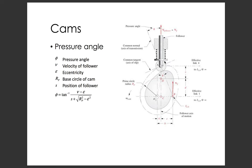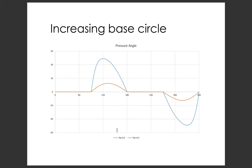When I plot the pressure angle for a prime circle radius of a half inch, the blue curve shows it spikes up close to 50 degrees — which is unacceptable. If I increase that prime circle radius to four inches — the gigantic ten-inch diameter billet cam — I'm down in the acceptable range. So I could make that prime circle radius a little smaller and get my pressure angle closer to 30 degrees while having a smaller cam profile with acceptable pressure angle.